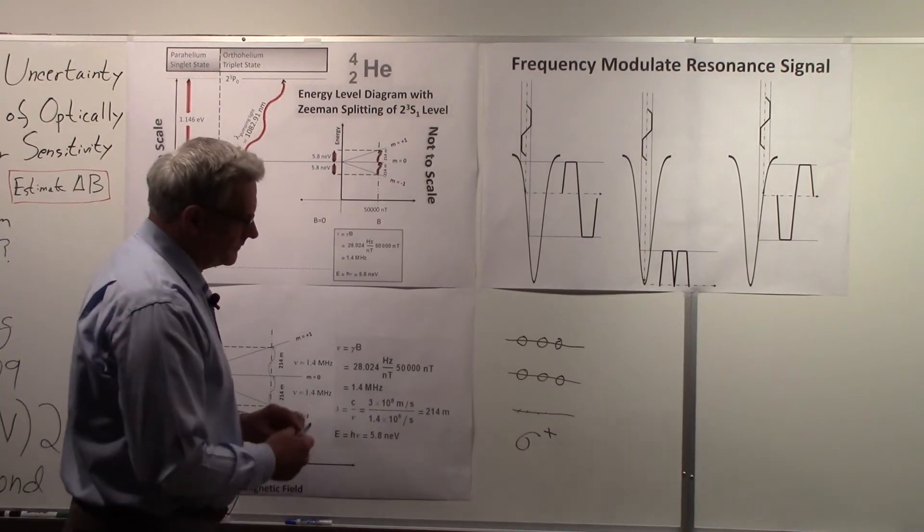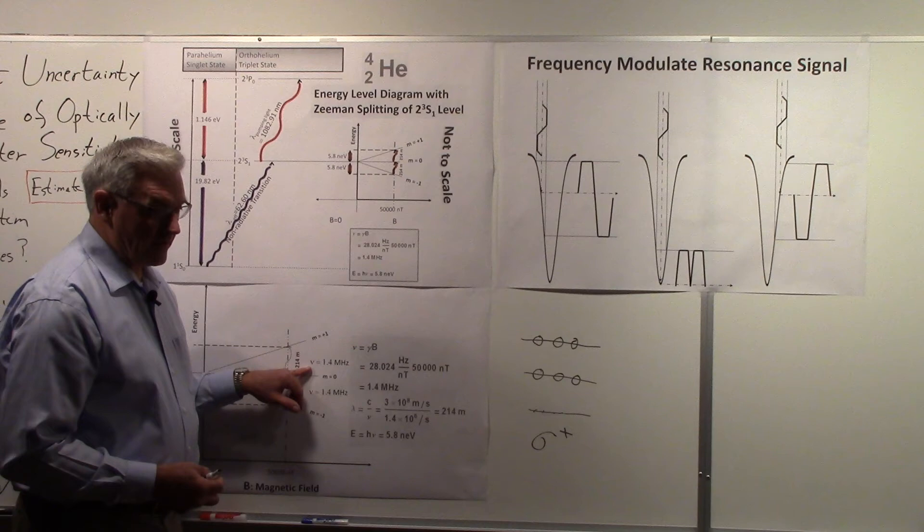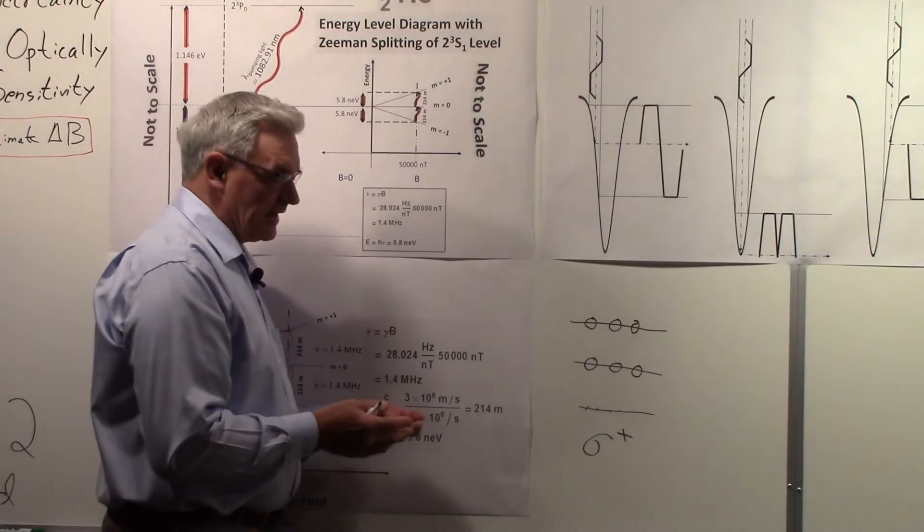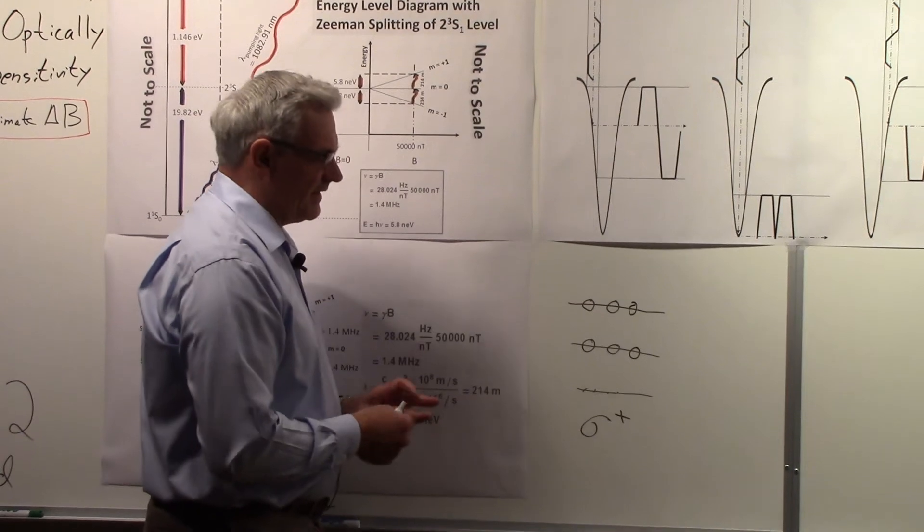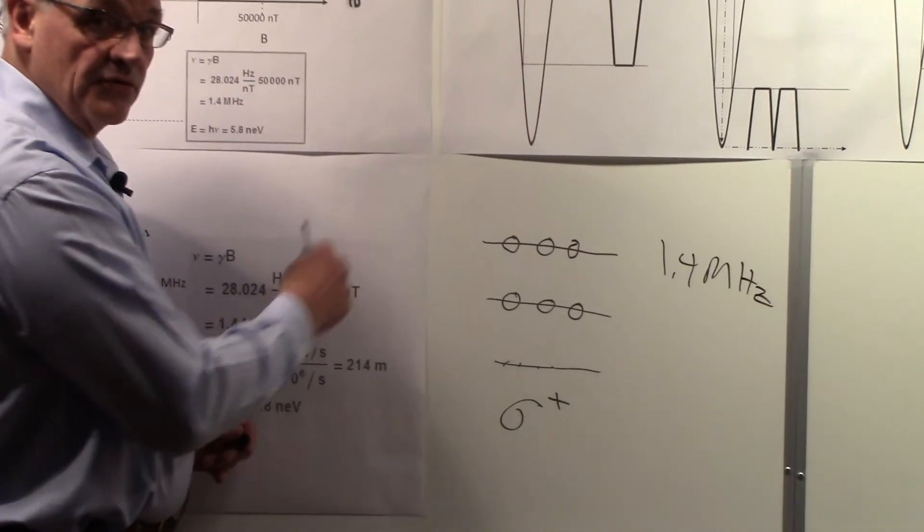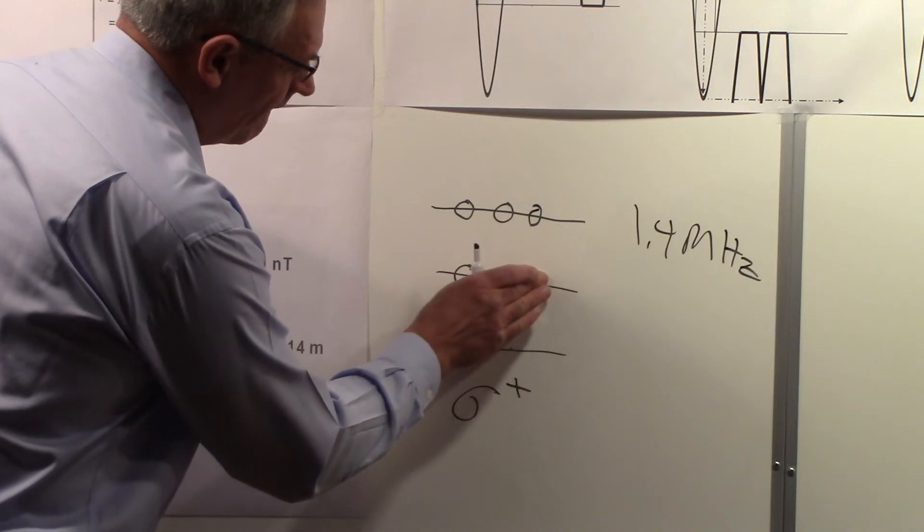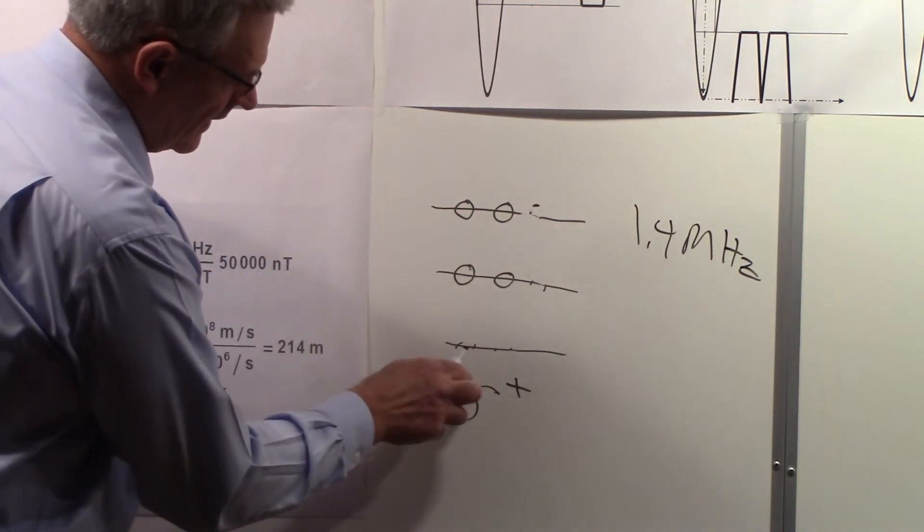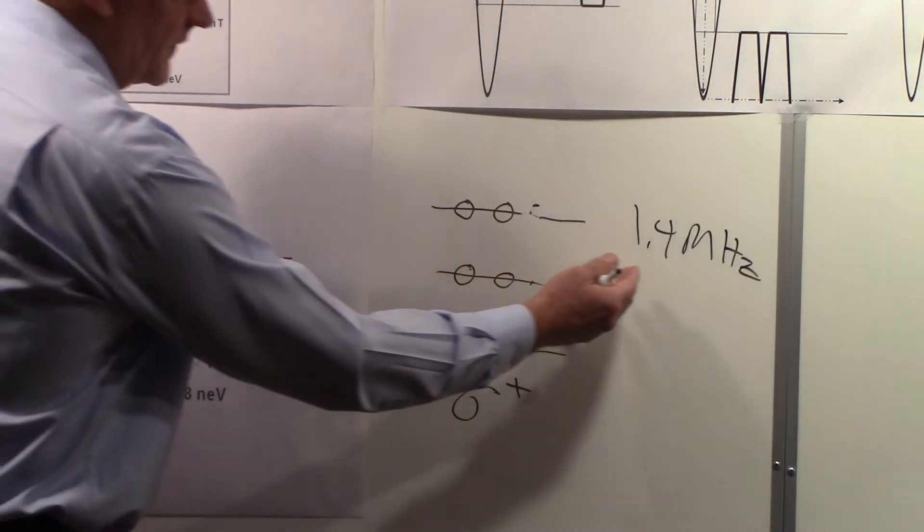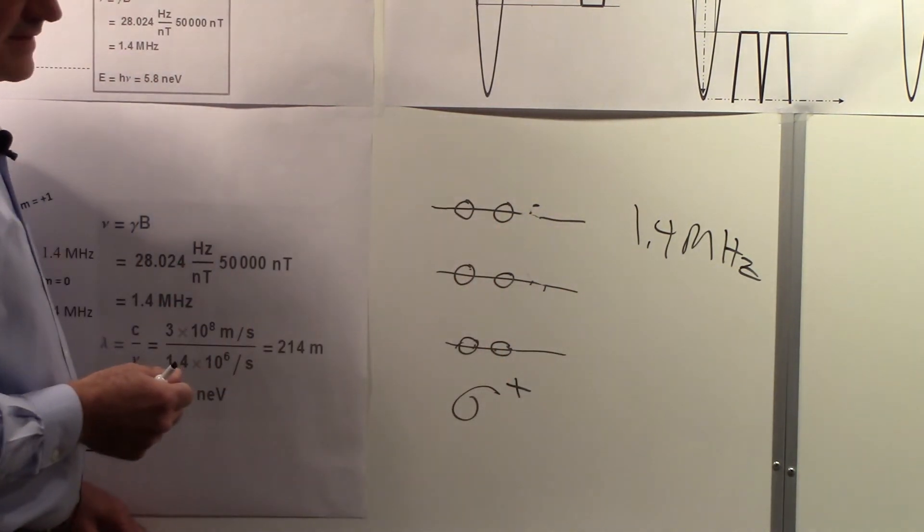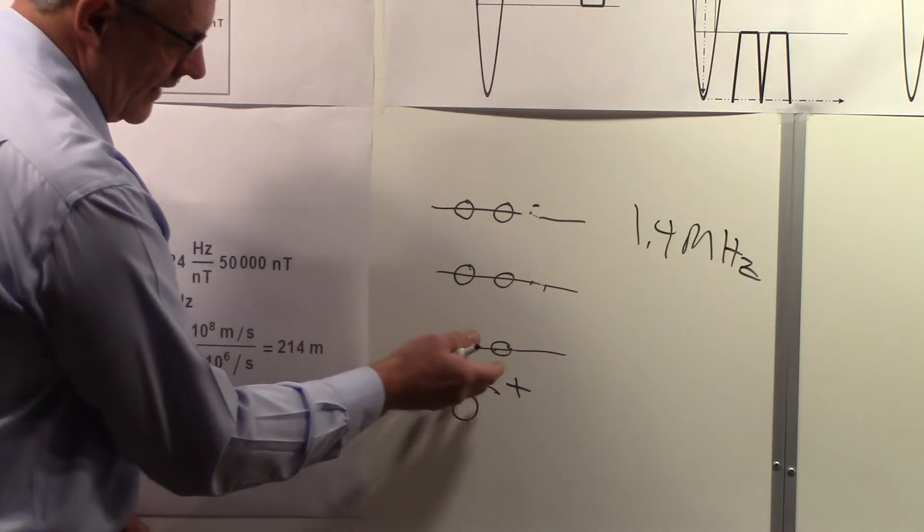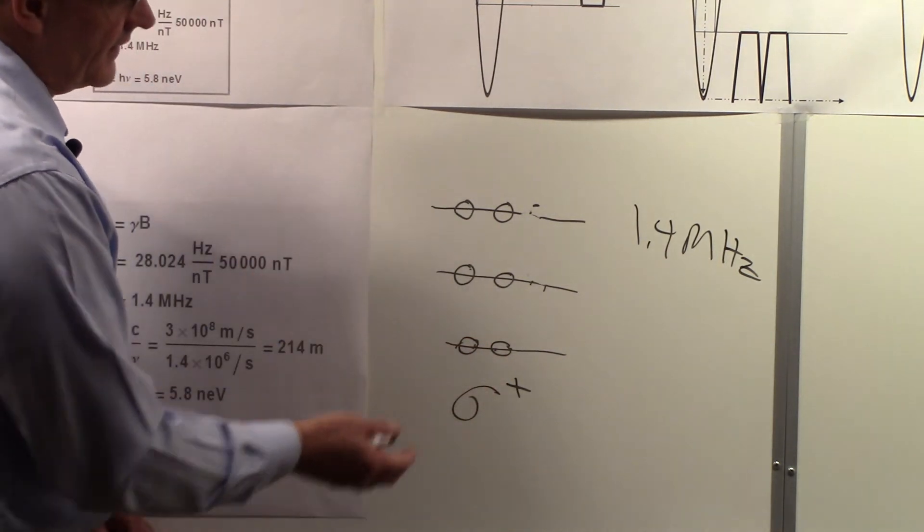Now, if we apply this frequency that we talked about over here for the 50,000 nanoteslas, the 1.4 megahertz, so now we have this cell. We shined light on it, the pumping light. We got atoms into this state. Now, if we apply the 1.4 megahertz to this, we can scramble this all up again. We'll go from that down to here. The pumping light is still on, but we're scrambling it up with this frequency, so we basically get a distribution that looks like this. The pumping light is working on these, sending them back up. They're coming back down. And when they fall here, some of the pumping light gets absorbed, and they go back up.